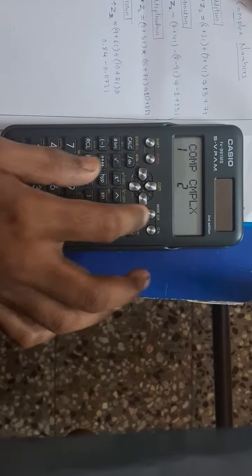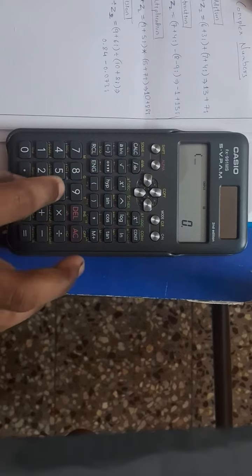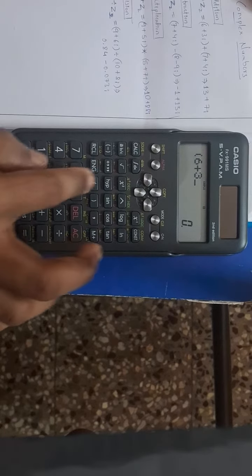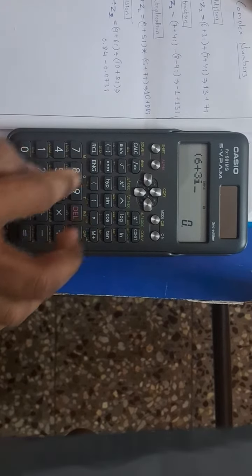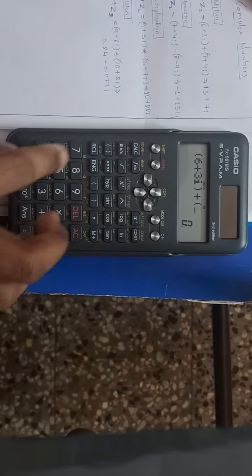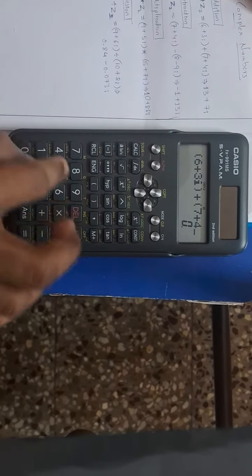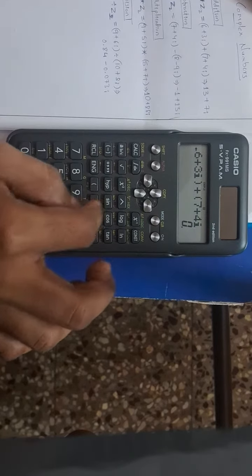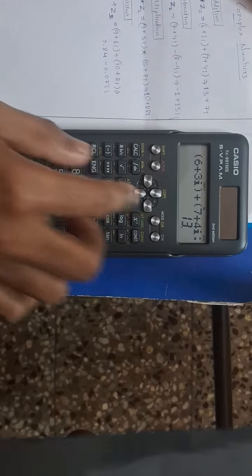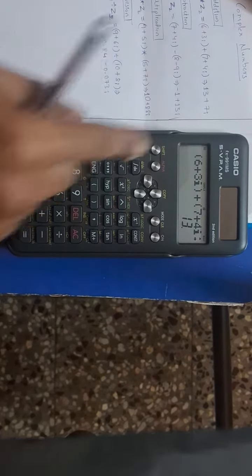First, press Mode, press 2 for complex. Bracket 6 plus 3i plus bracket 7 plus 4i equals 13, and imaginary part, shift equals: 13 plus 7i.